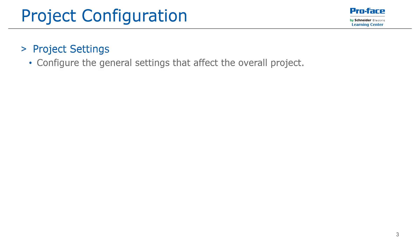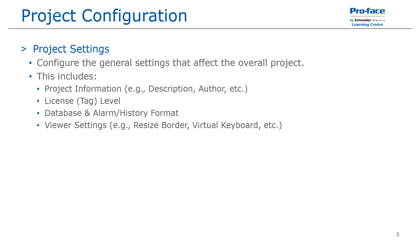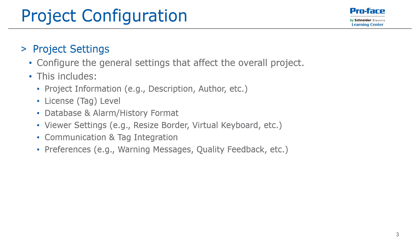The first item we are going to look at are the project settings, which allow you to configure the general settings that affect the overall project. These settings include the project information such as description or author, changing the license or tag level, the database and alarm and history formats, the viewer or runtime settings such as resize border or virtual keyboard, configuring communication and tag integration settings, and numerous preferences such as warning messages and quality feedback.